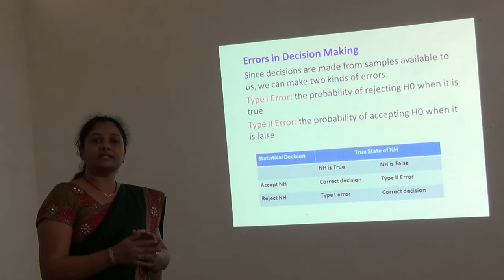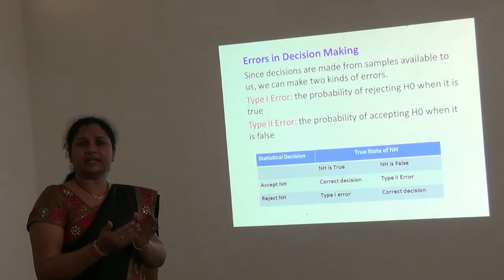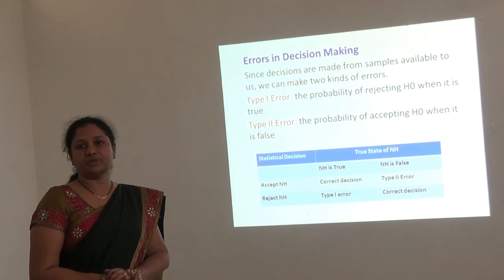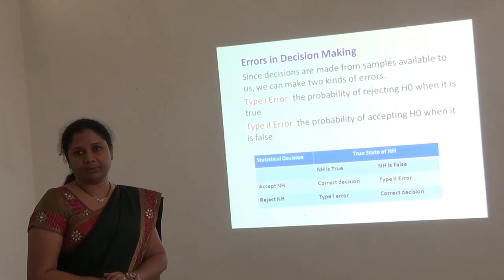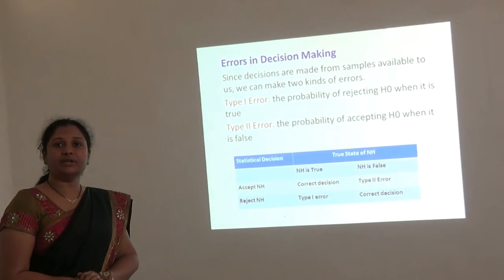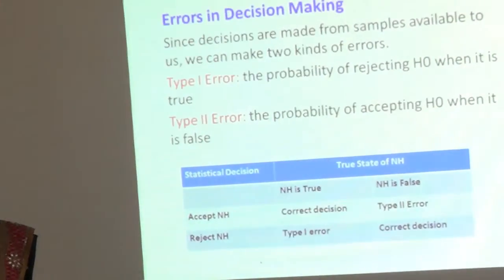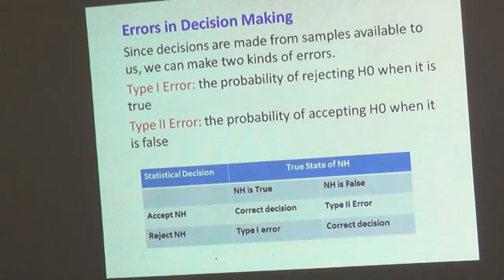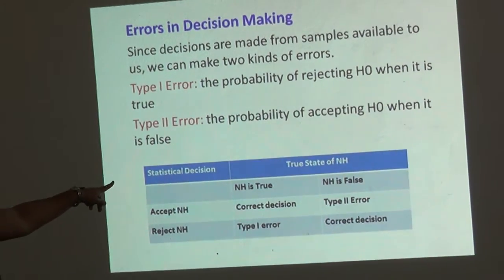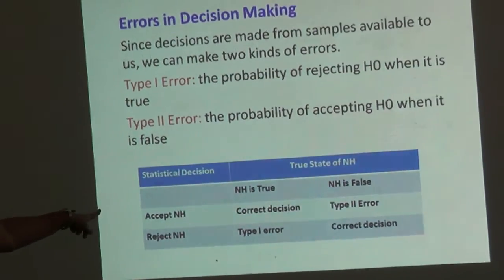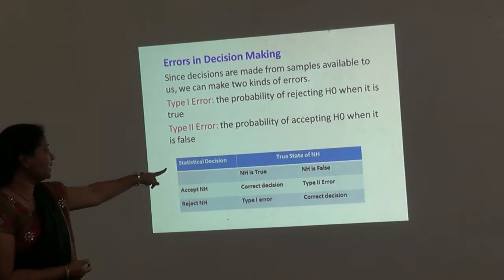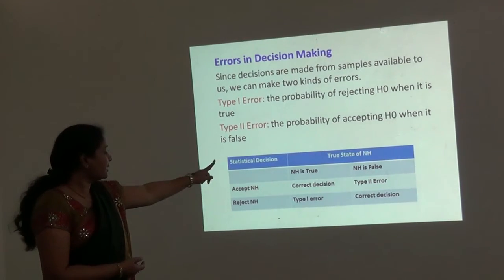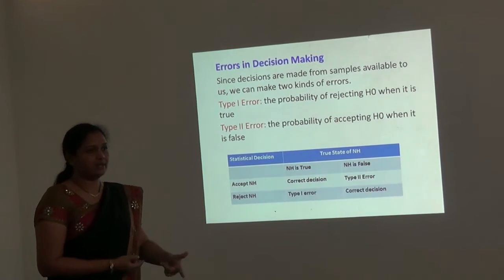Since we are not considering the entire population to take a decision and we are only taking a sample of it, there definitely arise errors in decision making. Here we come across two types of errors called Type 1 error and Type 2 error. The Type 1 error is the probability of rejecting H0 when it is true. The Type 2 error is accepting H0 when it is false. This can be shown as a table: if NH is true and we accept NH, it is a correct decision. If null hypothesis is false and we accept it, it becomes Type 2 error. If null hypothesis is true and we reject it, it becomes Type 1 error. If null hypothesis is false and we reject it, it becomes a correct decision.